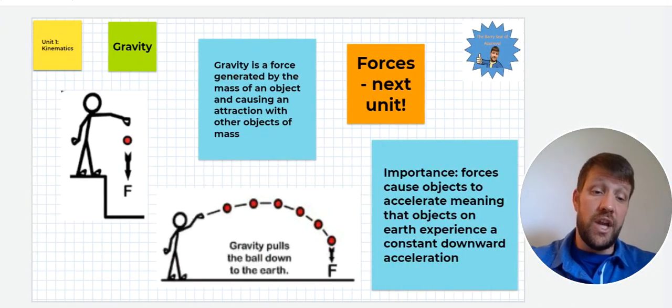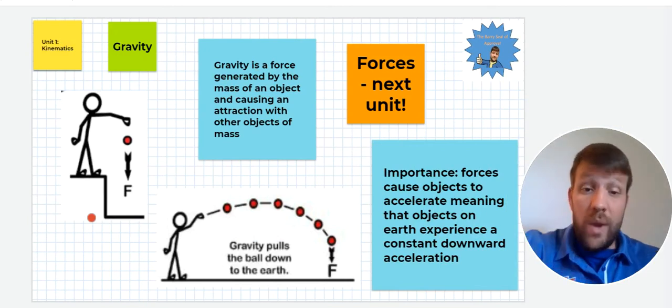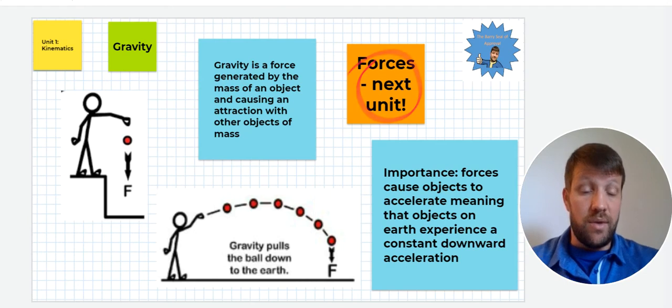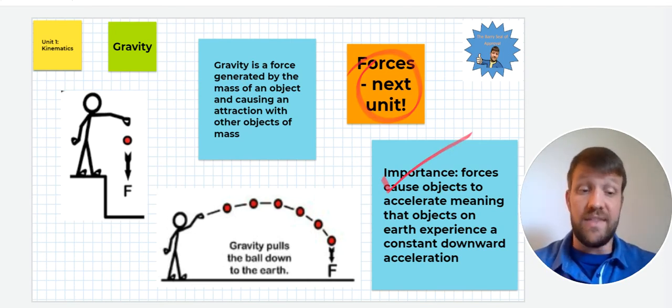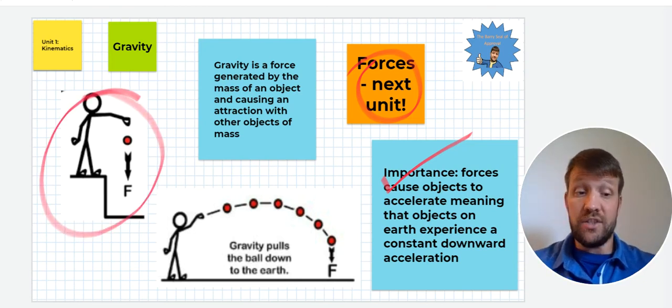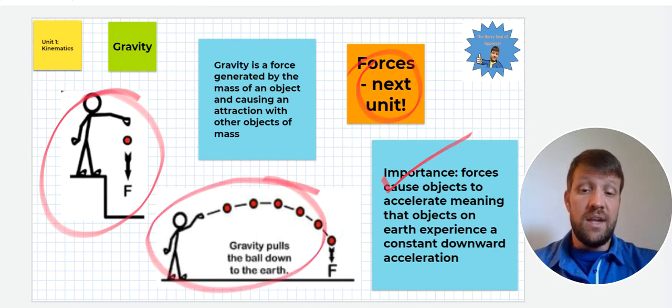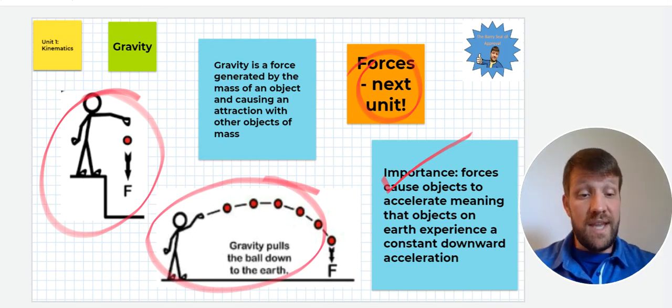All right, next thing we need to consider when we're talking about motion is gravity. Gravity is a force generated by the mass of an object and causing an attraction with other objects of mass. We haven't talked about forces yet, that will come in the next unit. What's really important right here is forces cause objects to accelerate. That will be covered more in the unit 2 video. But accelerating objects does change the motion of those objects. We can look right here and say, okay, I'm going to drop an object. It's not just going to stay wherever you released it from, it's going to fall downwards, which means it's accelerating in a negative direction. Its velocity is going from 0 to something greater than 0 as it falls, and its position is also changing. Same thing is going to happen when you throw an object. Somebody throws that object upwards, it's going to start moving upwards and eventually start moving downwards because there is an acceleration that's negative. This is known as the acceleration due to gravity.